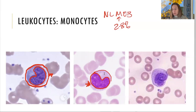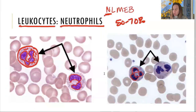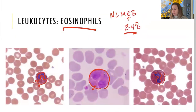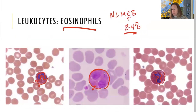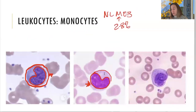Don't confuse monocytes with neutrophils. Monocytes are big with a massive indented kidney bean-shaped nucleus. Neutrophils have a multi-lobed nucleus. Monocytes are also bigger than neutrophils — neutrophils are bigger than red blood cells, but monocytes are bigger still. That's monocytes — and I hope this helps, have a great day!